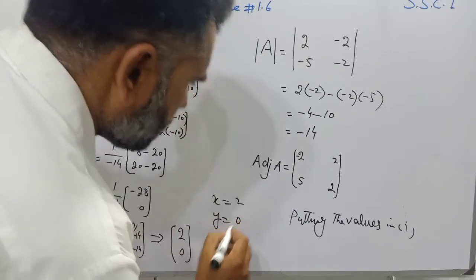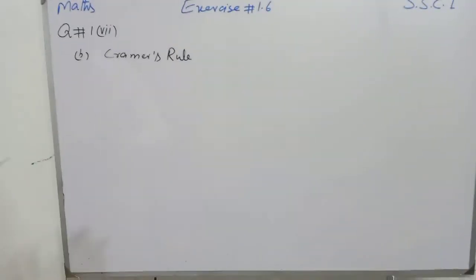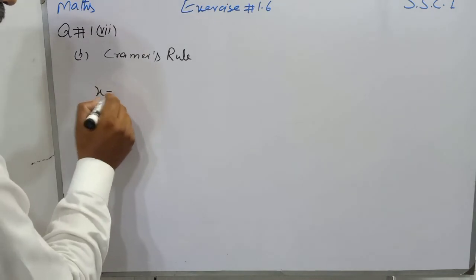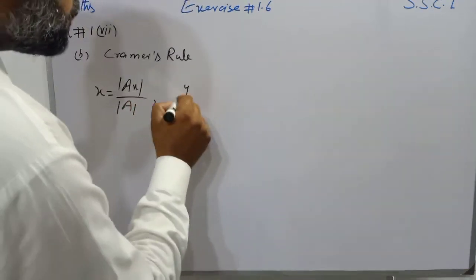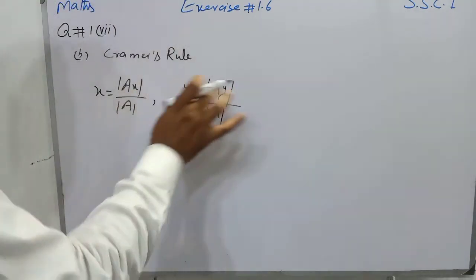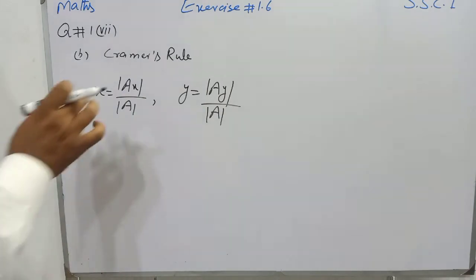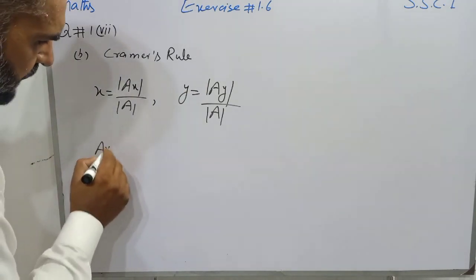Now for this question, students, we will solve using Cramer's rule. Using Cramer's rule: x is equal to the determinant of Ax over the determinant of A, and y is equal to the determinant of Ay over the determinant of A. We need determinant A, determinant Ax, and determinant Ay.